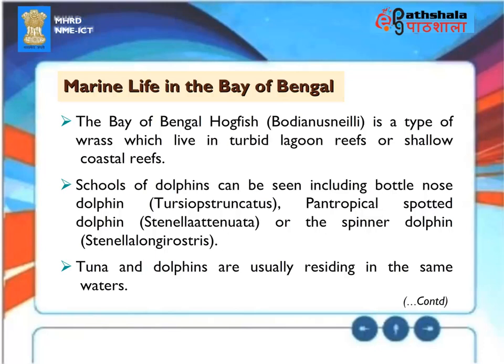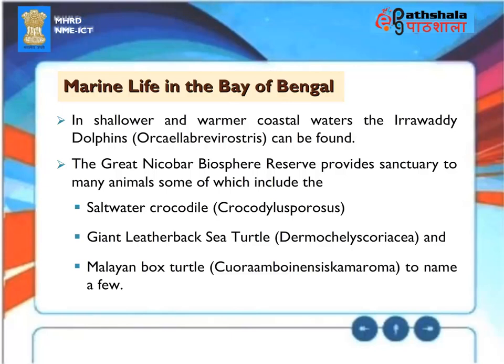The Bay of Bengal hogfish, Bodianus nilae, is a type of wrasse which lives in turbid lagoon reefs or shallow coastal reefs. Sculpts of dolphins can be seen including bottlenose dolphin, Turciops truncatus, pan-tropical spotted dolphin, Stenella attenuata, or the spinner dolphin, Stenella longirostris. Tuna and dolphins usually reside in the same waters. In shallower and warmer coastal waters, Irrawaddy dolphins, Oracella brevirostris, can be found. The Great Nicobar Biosphere Reserve provides sanctuary to many animals, including the saltwater crocodile, Crocodylus porosus, giant leatherback sea turtle, Dermochelys coriacea, and Malayan box turtle, Cuora amboinensis, to name a few.